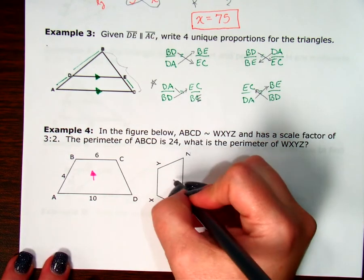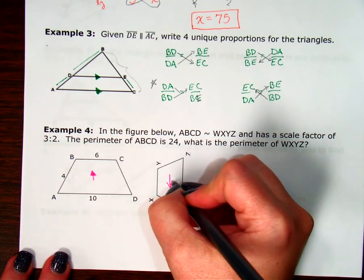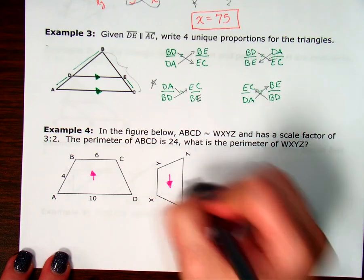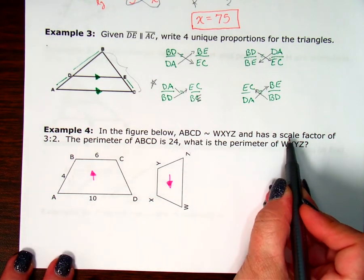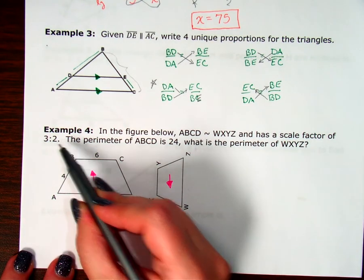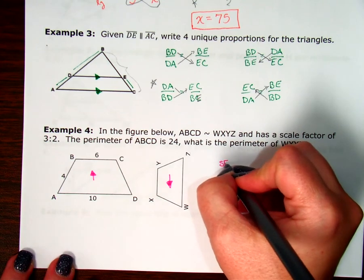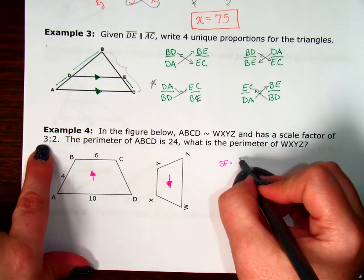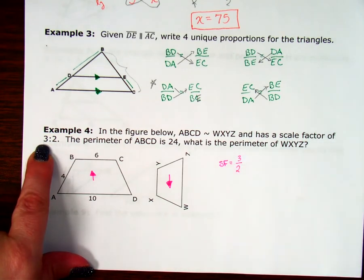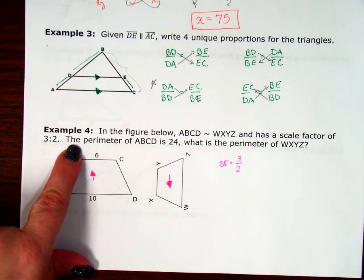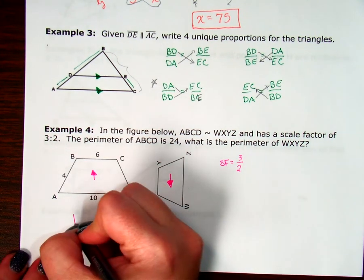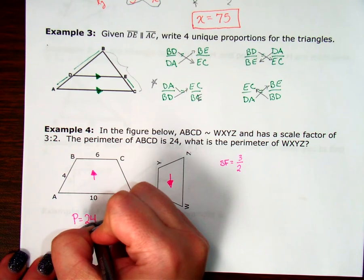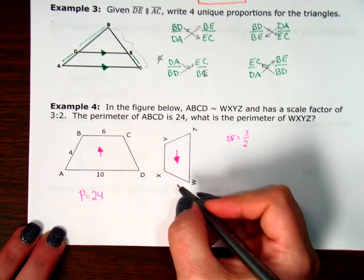WXYZ goes on the bottom. So that, or comes second. So that's going to go on the bottom of my fraction. We have a scale factor of 3 to 2. So my scale factor equals 3 to 2. The 3 comes first. So it goes on top. And the 2 goes on the bottom. The perimeter of triangle ABCD is 24. What is the other perimeter?